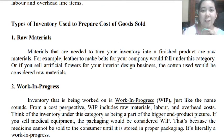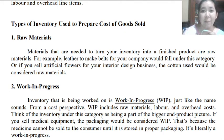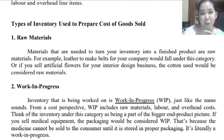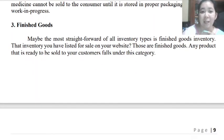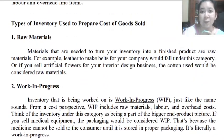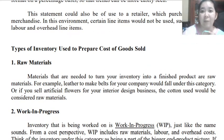This next video lecture is still the continuation of our Module 3, Cost Accounting Cycle. We are now looking at the types of inventory used to prepare the cost of goods sold, which is for a manufacturing type of business. We mentioned this in our previous video lecture. We have the raw materials, work in process, and finished goods — these are the three main inventories for our cost of goods sold.